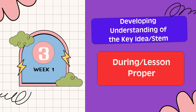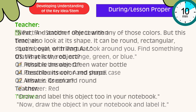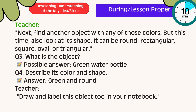Developing Understanding: Let's begin with Part A. Look around you and find something that is yellow, red, orange, green, or blue. A possible answer: a red pencil case. For Question 2, What is its color? — Red. Now draw the object in your notebook and label it. Next, find another object with any of those colors, but also look at its shape — it can be round, rectangular, square, oval, or triangular. Question 3: What is that object? Possible answer: a green water bottle. Question 4: Describe its color and shape. Possible answer: color green and round. Draw and label this object too.